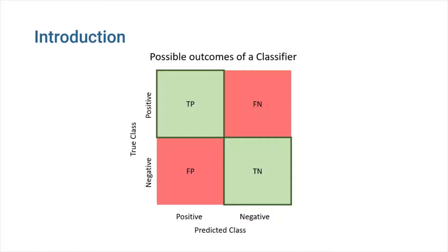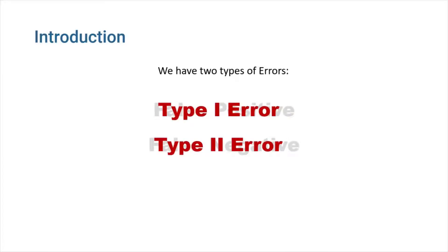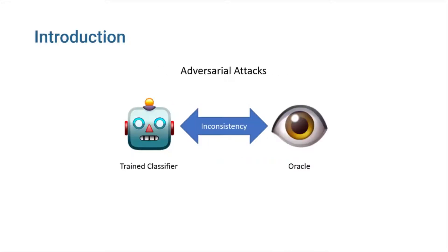True positive and true negative outcomes are both correct outputs. False positive and false negative are two examples of classifier mistakes, which are erroneous outputs. False positive is also known as type 1 error, and false negative is sometimes referred to as type 2 error. Any trained classifier will have inconsistencies with another trained classifier who has complete authority on a subject, which we refer to as oracle.